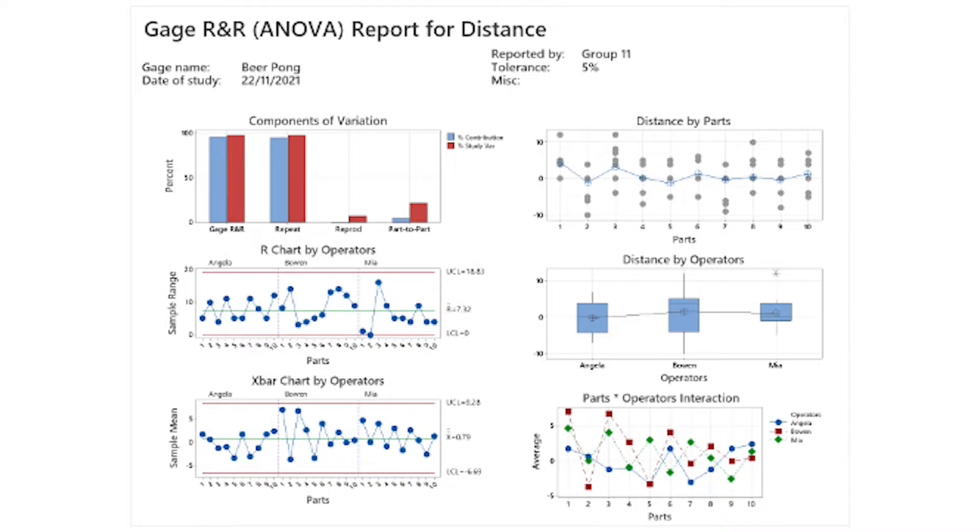For distance by part and operator plots, both part and operator have the same pattern, which means that there is no operator interaction and bias. Hence, as a whole, this calls for a more precise and more controlled measuring system to be used in the future if the project is conducted again.